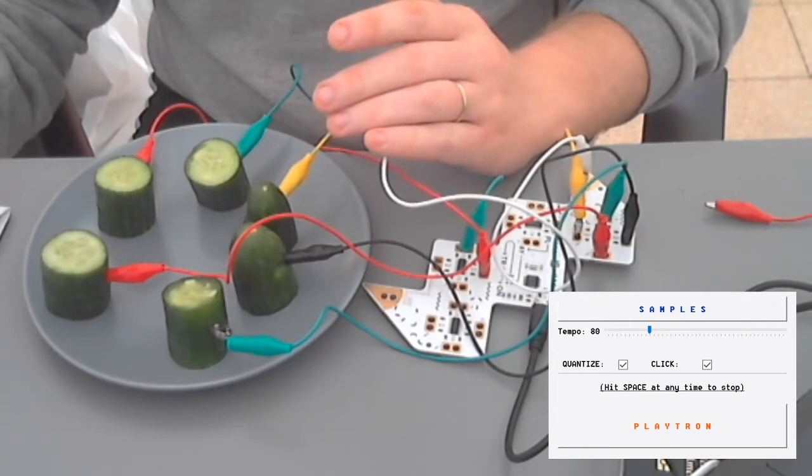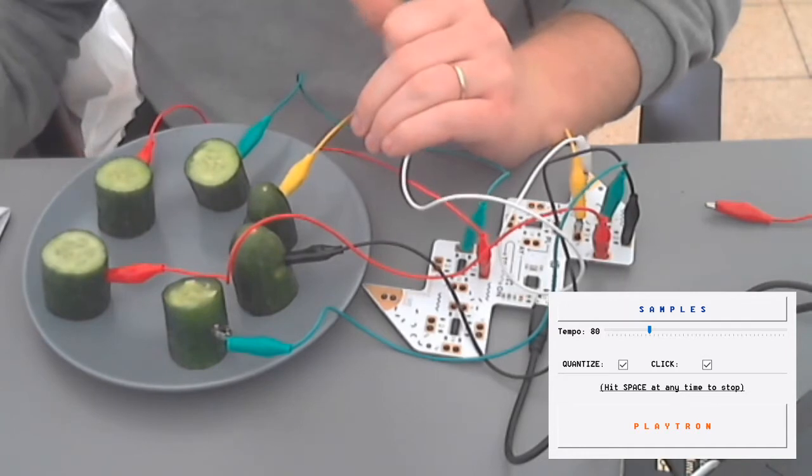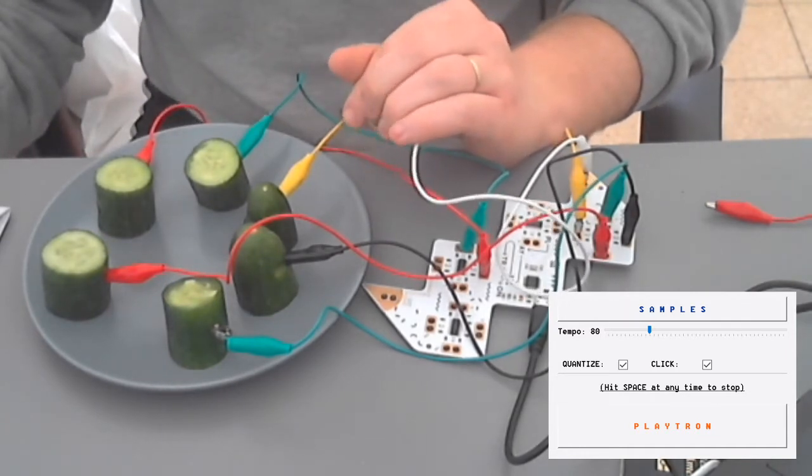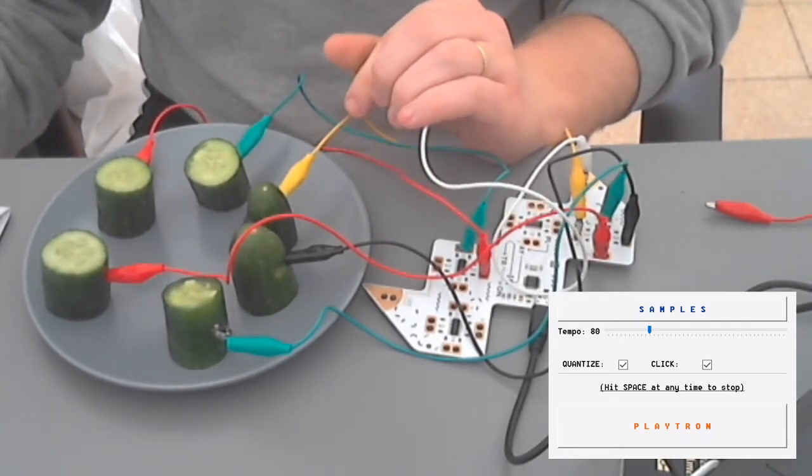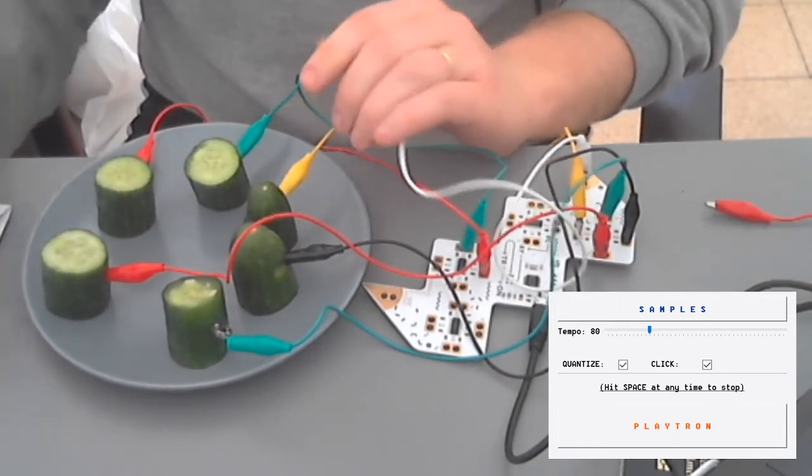I want to compare how a quantized track sounds as opposed to an unquantized attempt at playing the Playtron. So I'll play it first quantized with a metronome click and you guys can get an idea of what it sounds like.